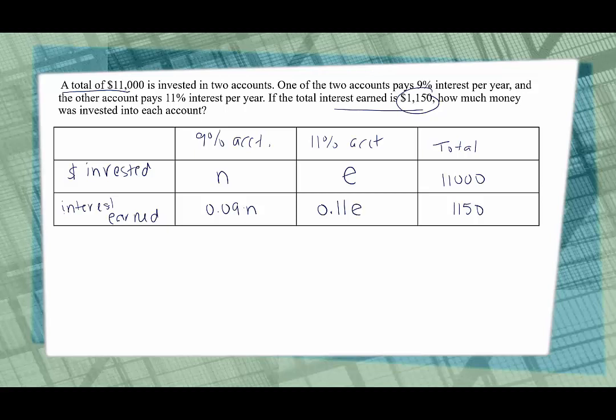Now why do I like table so much? Because the work is done for me now. Look, investment plus investment equals the total. Interest earned plus interest earned equals the total. So it sets up the two equations that I need for this problem. The first one is the nice one. We have N plus E is equal to 11,000. The second one is a little bit trickier. We have 0.09 of N plus 0.11 of E is equal to 1,150.